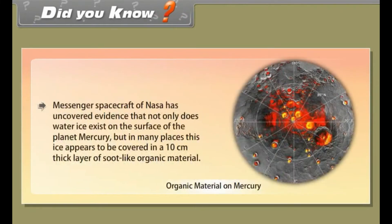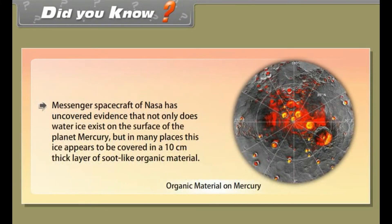Did you know? NASA's Messenger spacecraft has uncovered evidence that not only does water ice exist on the surface of the planet Mercury, but in many places this ice appears to be covered in a 10 cm thick layer of soot-like organic material.